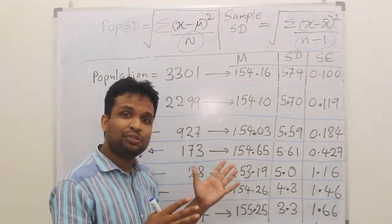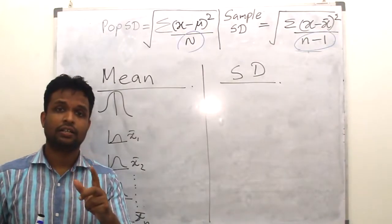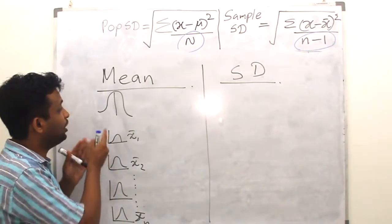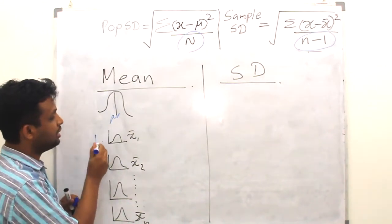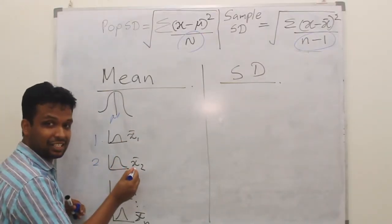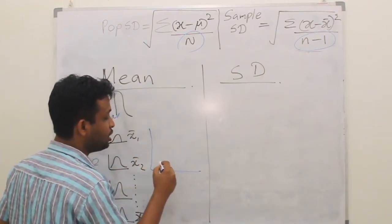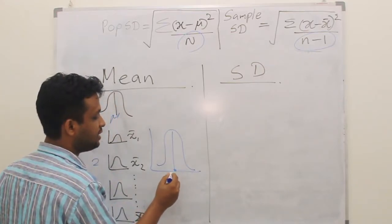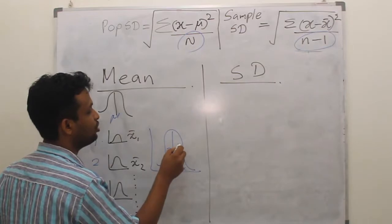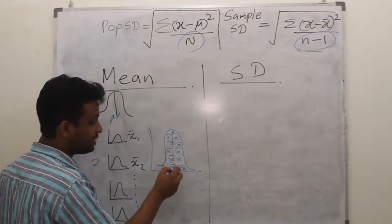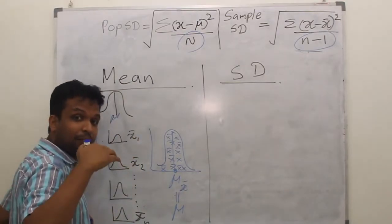The means will be almost the same as the original mean, but the standard deviation will be slightly less. To recall: assume this is the population distribution where the population mean mu is there. You take multiple samples — the first sample has mean x-bar 1, the second has x-bar 2, and so on up to x-bar n. You can draw the sampling distribution where the x-bars take the shape of a normal distribution, and in the center you have mu x-bar, which is almost the same as mu. This mean is an unbiased estimator.